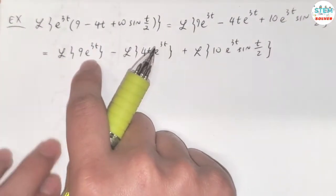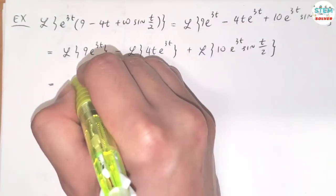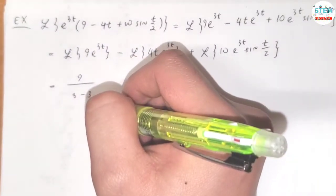Now for this one, the Laplace transform of this is simply 9 over s minus 3.